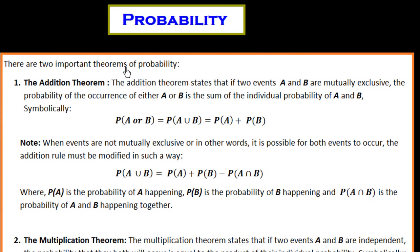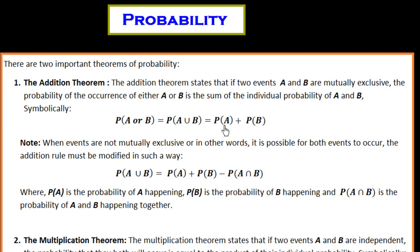Hi friends, in this session on probability we study the theorems related to probability. There are two important theorems: number one is the Addition Theorem and number two is the Multiplication Theorem. In the Addition Theorem there are two cases: one where the events are mutually exclusive and one where the events are not mutually exclusive. The theorem states that if two events A and B are mutually exclusive, the probability of occurrence of either A or B is the sum of their individual probabilities, symbolically P(A∪B) = P(A) + P(B).